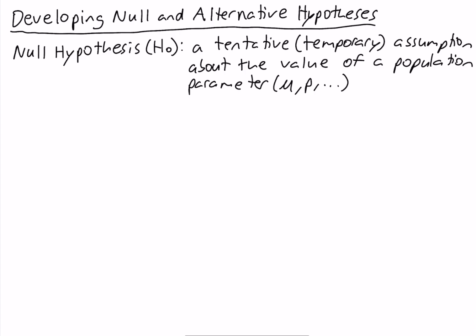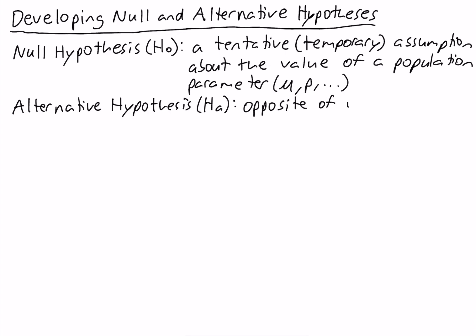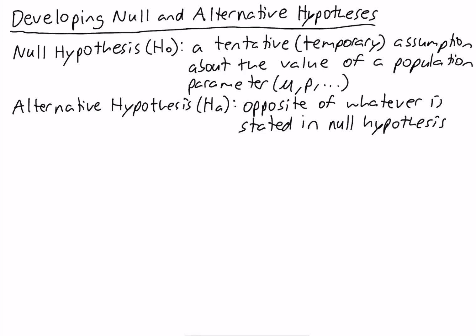Our second hypothesis is called the Alternative Hypothesis, written as HA, and it is the opposite of whatever is stated in the Null Hypothesis. So we have two hypotheses in hypothesis testing — a Null and an Alternative — and they are opposite statements about a population parameter. Either the Null Hypothesis is going to be true, or the Alternative Hypothesis is going to be true. They cannot both be true at the same time.